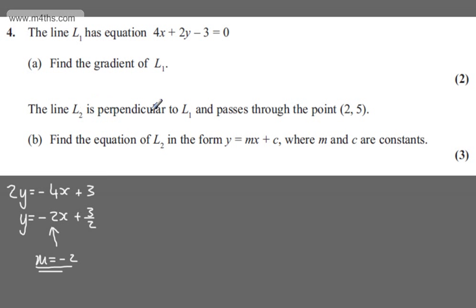The line L2 is perpendicular to L1 and passes through the point (2, 5). In part B for three marks, find the equation of L2 in the form y = mx + c, where m and c are constants.